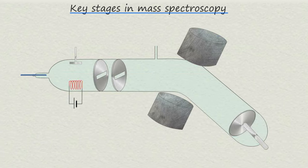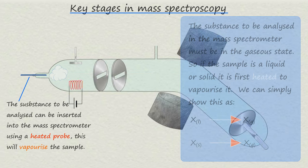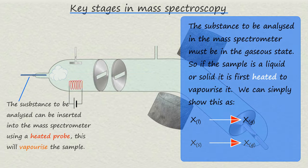The first step in getting the sample to be analyzed is obviously to get it actually physically inside the mass spectrometer. Now the substance to be analyzed must be in the gaseous state.